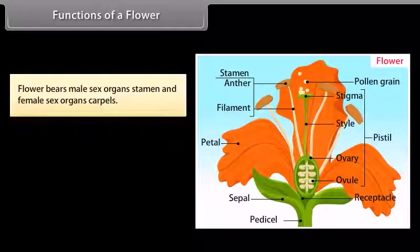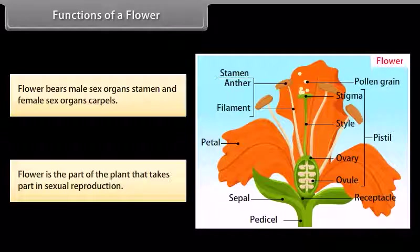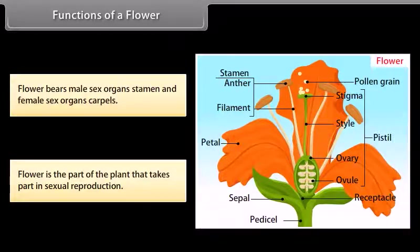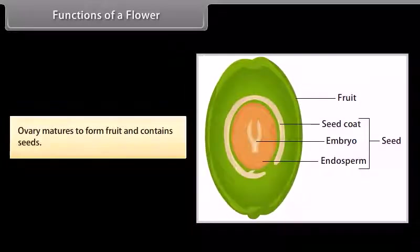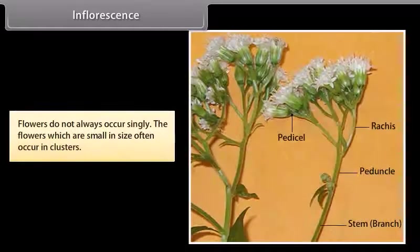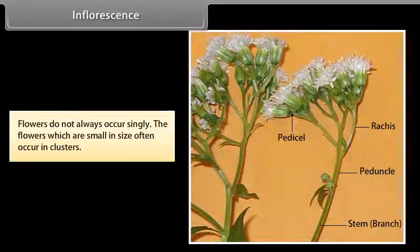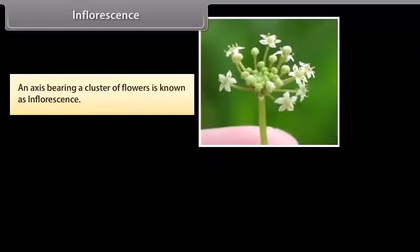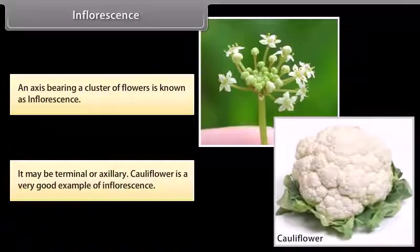Functions of a flower: the flower bears male sex organs (stamens) and female sex organs (carpels). It is the part of the plant that takes part in sexual reproduction. The ovary matures to form fruit and contains seeds. Flowers do not always occur singly; flowers that are small in size often occur in clusters. An axis bearing a cluster of flowers is known as an inflorescence. It may be terminal or axillary; cauliflower is a very good example of inflorescence.